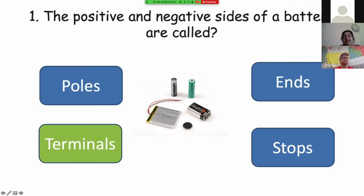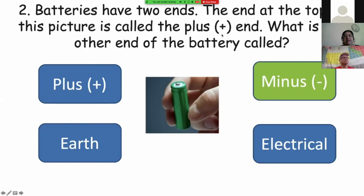The positive and negative sides of a battery are called terminals. The second one is a minus one. In a battery, we have a plus end and a minus end.